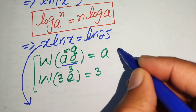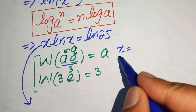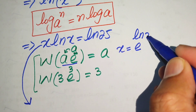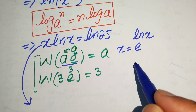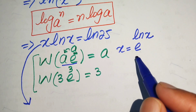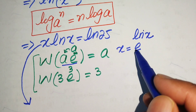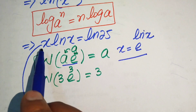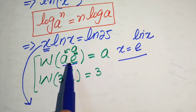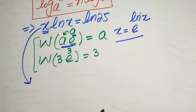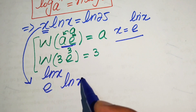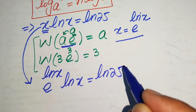We note that x can be written as e to the power of log x, since e and log are inverses of each other and cancel out, returning x. We replace x in the equation with e^(log x), giving us e^(log x) times log x equals log of 25.